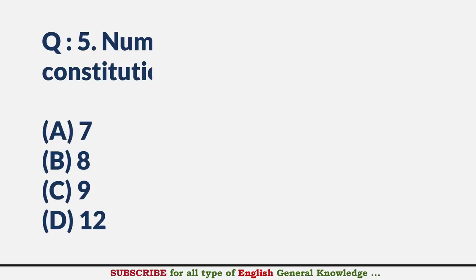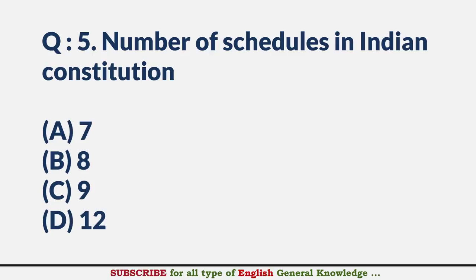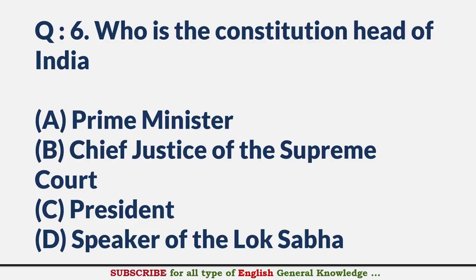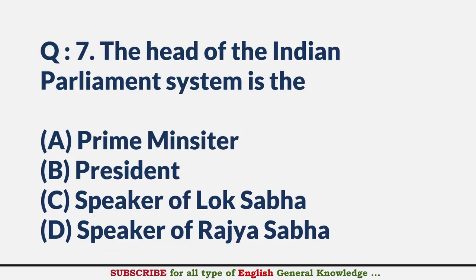Number of schedules in the Indian Constitution? — Answer D: Twelve. Who is the constitutional head of India? — Answer C: President. The head of the Indian parliament system is the — Answer B: President.